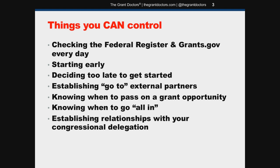If you can, set a drop-dead date beyond which you won't apply. If you don't have your act together 10 days before the deadline, you're not going to do it. The stuff you throw together on short notice is usually not competitive and has little chance of being funded. There are just so many moving parts within a federal application. If you can't get everything together at least 10 days before the deadline, just pass and wait for the next one.